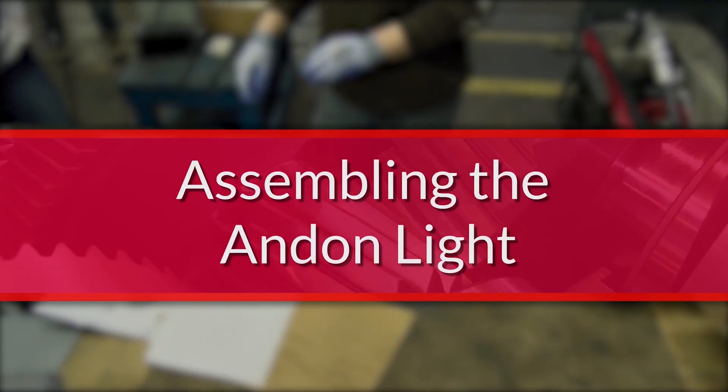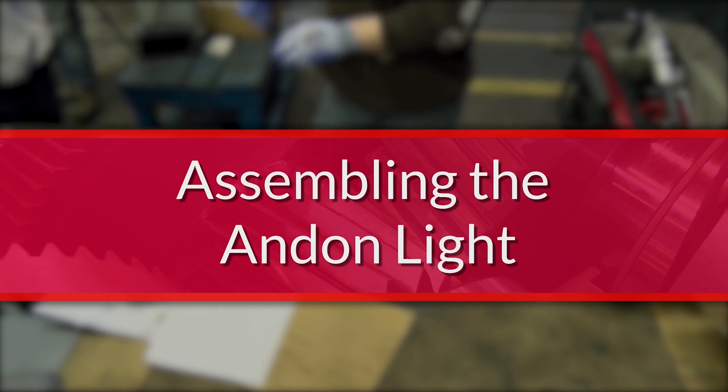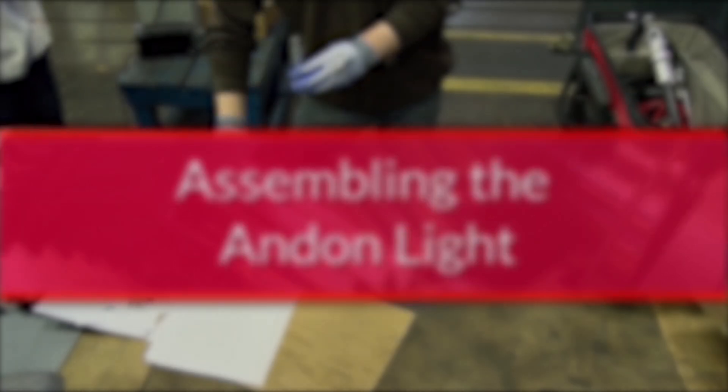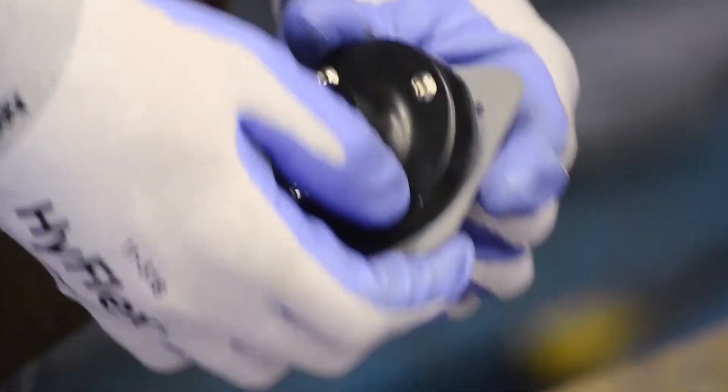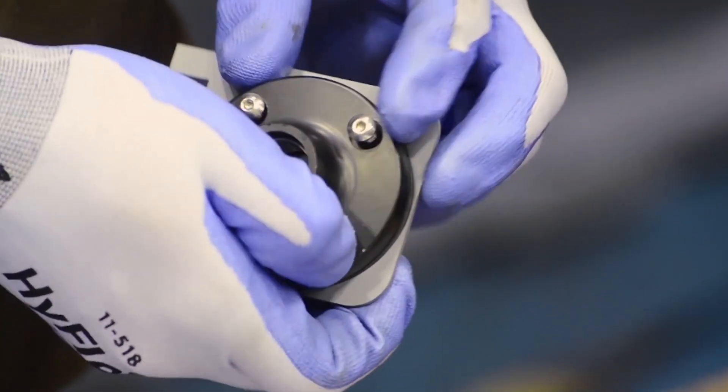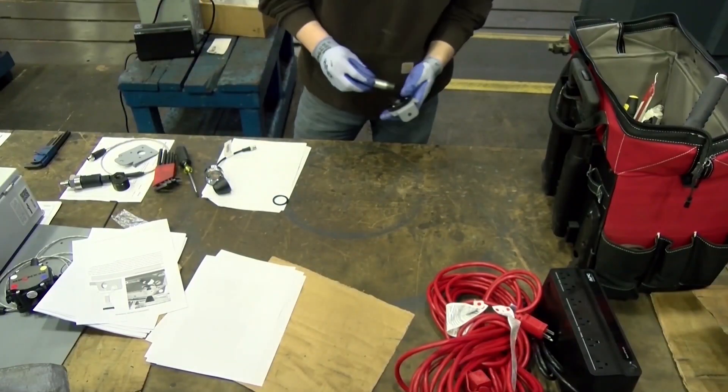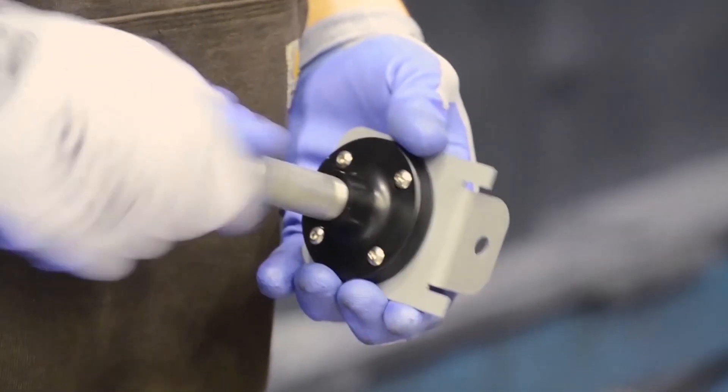Take the components of the Andon light and begin to assemble them. Take the screws and fit them into the holes of the circular base. Take the mounting bracket and using the washers and nuts, assemble them together. Insert the rubber grommet in the center of the circular base.